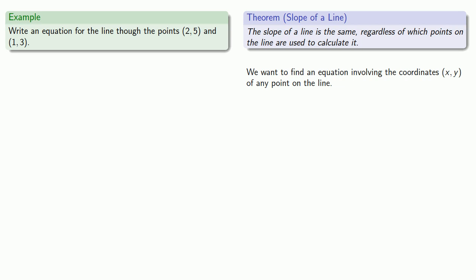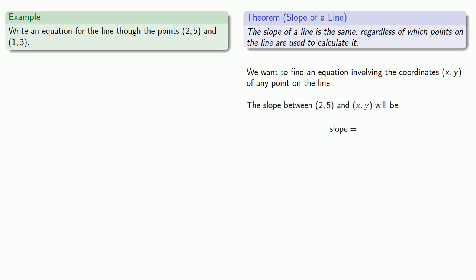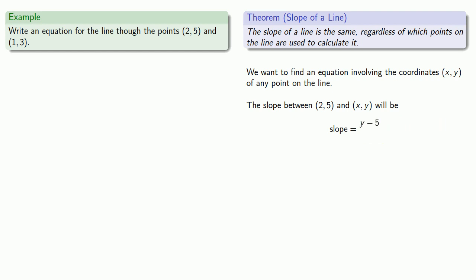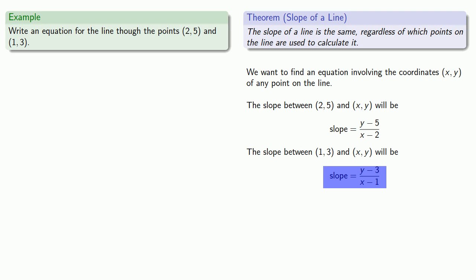We want to find an equation involving the coordinates of any point on the line. The slope between a known point and xy will be y minus 5 over x minus 2. We can also calculate the slope between another known point and xy. Since both expressions represent the same slope, we can set them equal to each other to get an equation for the line.